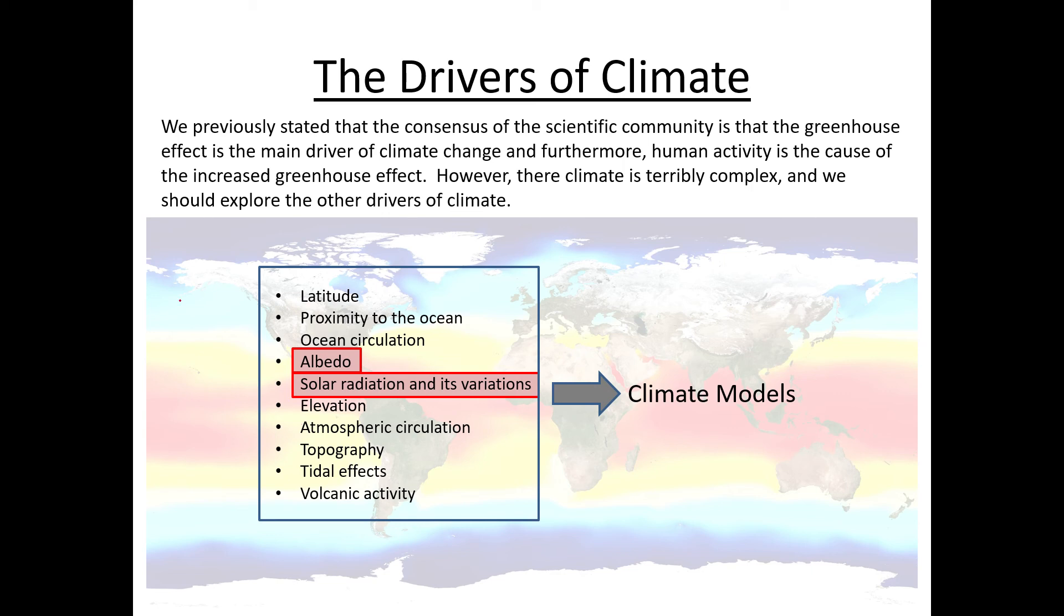One, because albedo in particular is nice and simple and explains a lot about the energy balance of the earth. A lot of these other factors like latitude and proximity to the ocean have localized effects but have less effect in terms of regional or even global climate.